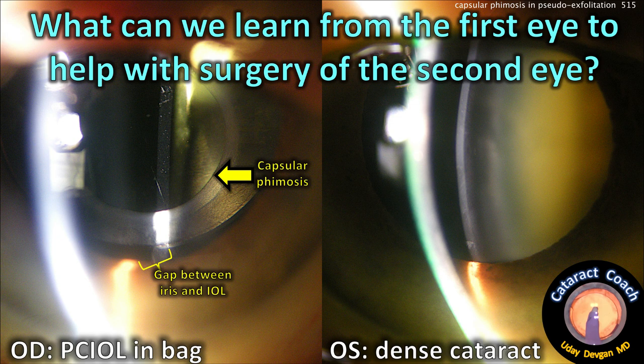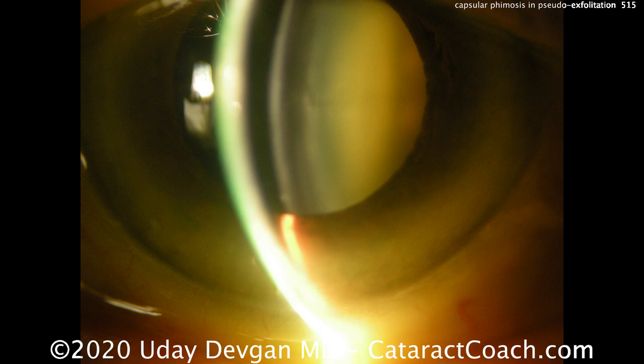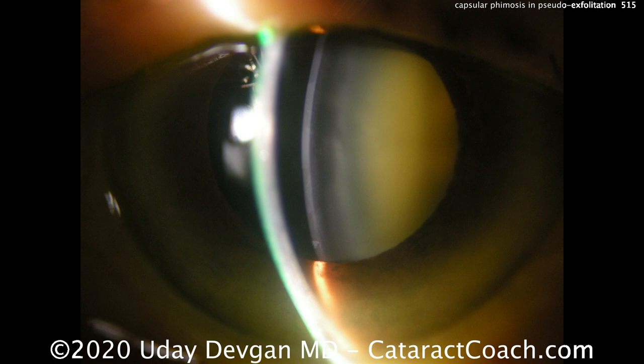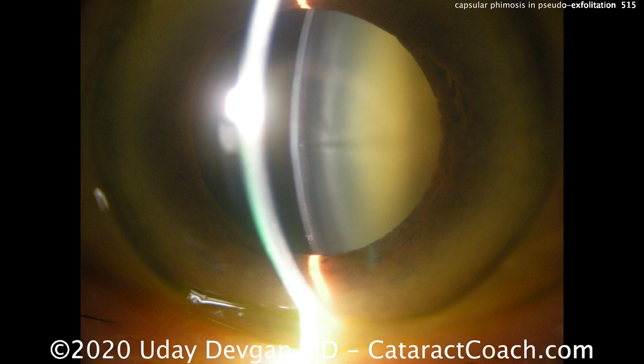What can we learn from the first eye to help with surgery of the second eye? Here's the eye of the cataract. You can see the anterior chamber is very shallow — the gap between the anterior lens capsule and the cornea is very narrow. This slit beam image shows the whole picture. Again, a very shallow anterior chamber, less than two millimeters in anterior chamber depth. The lens is very dense — at least a three to four plus nuclear cataract. It's not going to be a simple surgery.